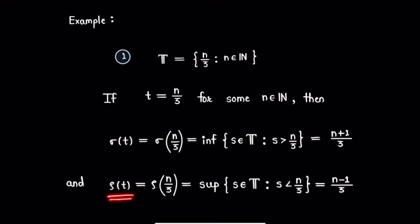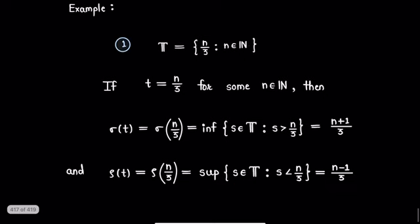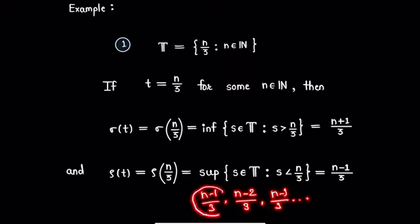On the other hand, rho(t) = rho(n/3) is the supremum of the set of all elements s in time scale T such that s is strictly less than n/3, and the supremum of this set is (n-1)/3. This set contains numbers (n-1)/3, (n-2)/3, (n-3)/3, and so on, and its supremum is (n-1)/3. So we get rho(t) = (n-1)/3.